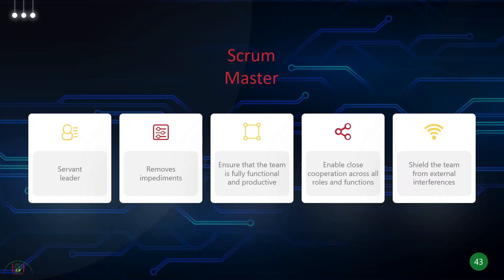They should have good project management skills as well, and they have to be a catalyst for change — very important. They are going to help the team, and maybe even the organization, adopt Scrum principles. They have to foster agile principles — they are the cheerleader for agile. They are the coach and mediator between the team and the Product Owner. They are the voice of Scrum, and the Scrum Master is a servant leader.